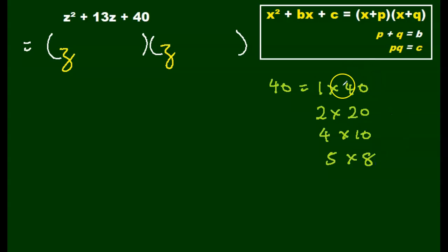Let's see if we can add or subtract the numbers to get 13. 40 plus 1 is 41. 40 minus 1 is 39. So no. 20 plus 2 is 22. 20 minus 2 is 18. So no. 4 plus 10 is 14. 10 minus 4 is 6. No.